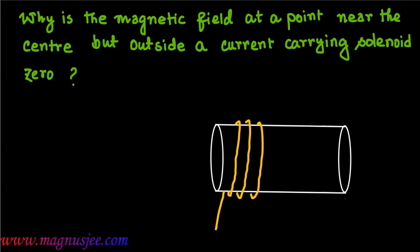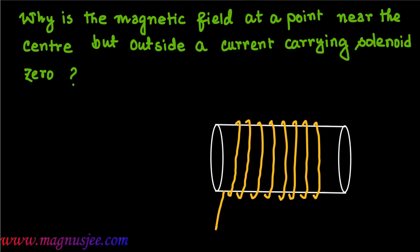In the diagram we have a solenoid — an insulated metallic wire wound in the shape of a helix on a cylindrical core. I denotes the current flowing through the solenoid. The two ends of the solenoid are shown, and the dotted horizontal line is the axis of the solenoid.